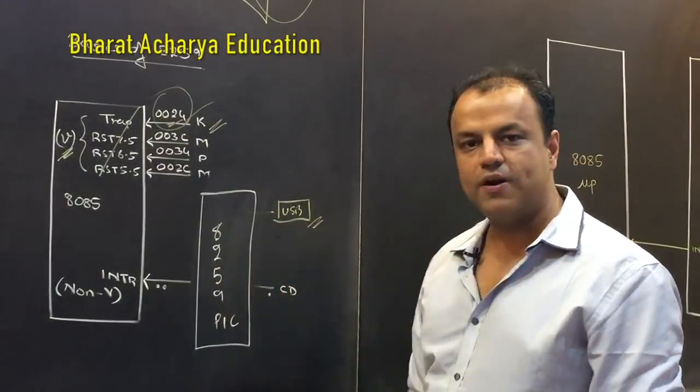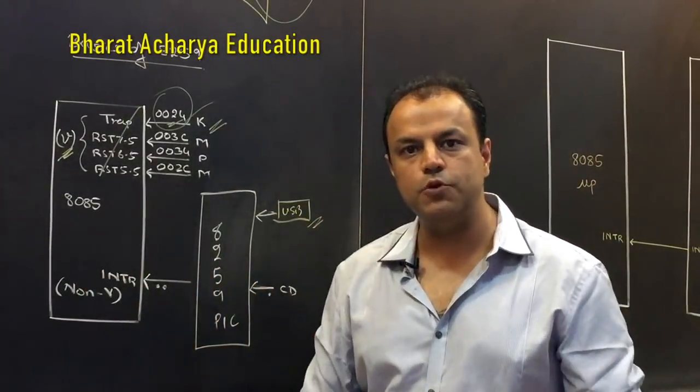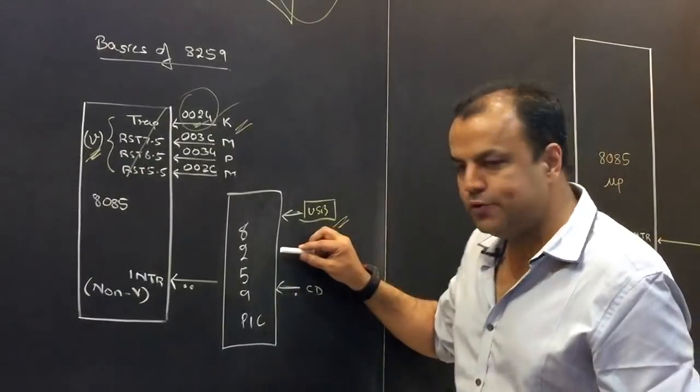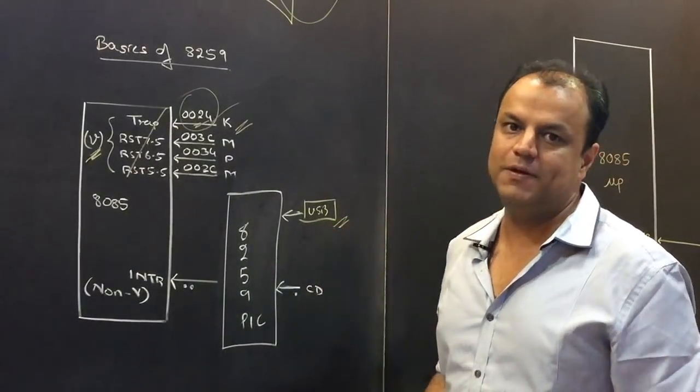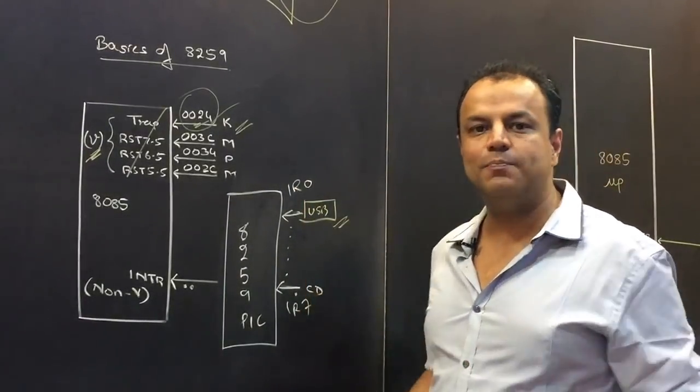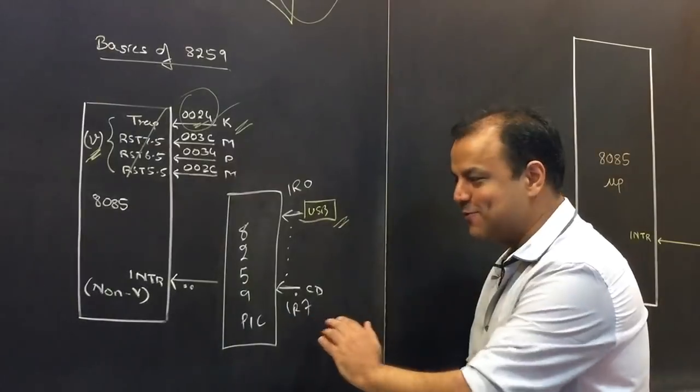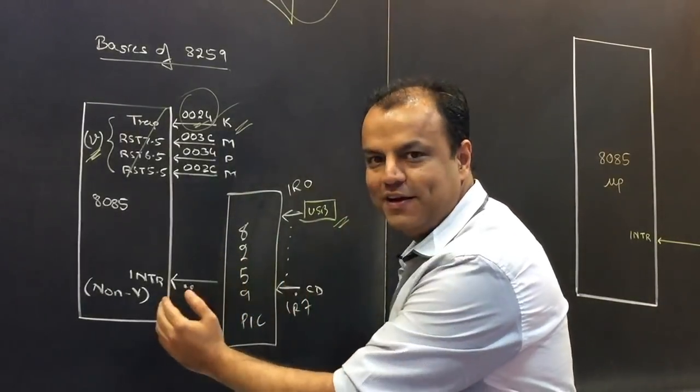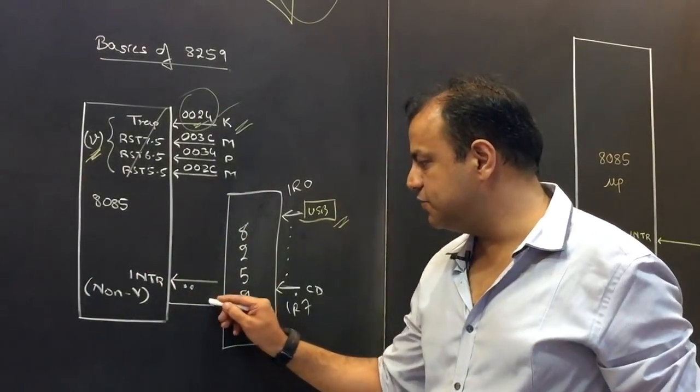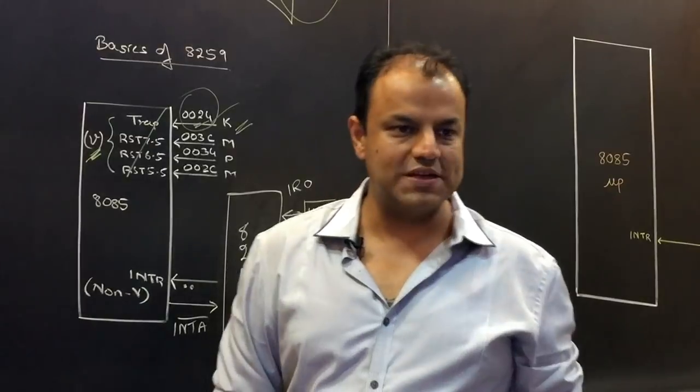8259-PIC, Programmable Interrupt Controller. The idea is, devices will interrupt 8259. 8259 will interrupt the microprocessor. Microprocessor still doesn't know who has interrupted, but who knows? 8259. How? Will 8259 have a single pin to accept interrupts? No. That will be stupid. It will be the same thing as microprocessor. 8259 has several pins. IR0 to IR7. That means 8 pins. IR stands for Interrupt Requests. I'm sure you figured that out. So, there are 8 interrupt requests. Whenever a device interrupts 8259, 8259 interrupts the microprocessor. Microprocessor still doesn't know who has sent the interrupts. So, now microprocessor will ask whom? 8259. How? By giving a signal called INTA bar. Interrupt Acknowledgement.